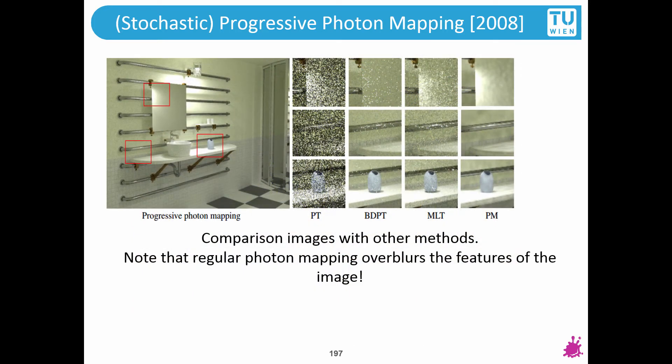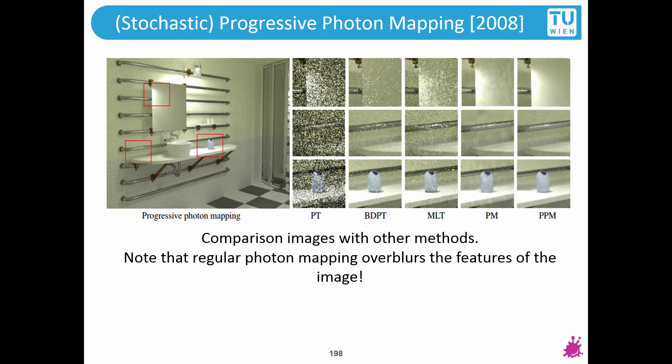Looking at results with the classical algorithms: photon mapping kind of works, but it overblurs many of the important features of the image. The result with PPM gives much sharper images with slightly more noise, but it is practically consistent.